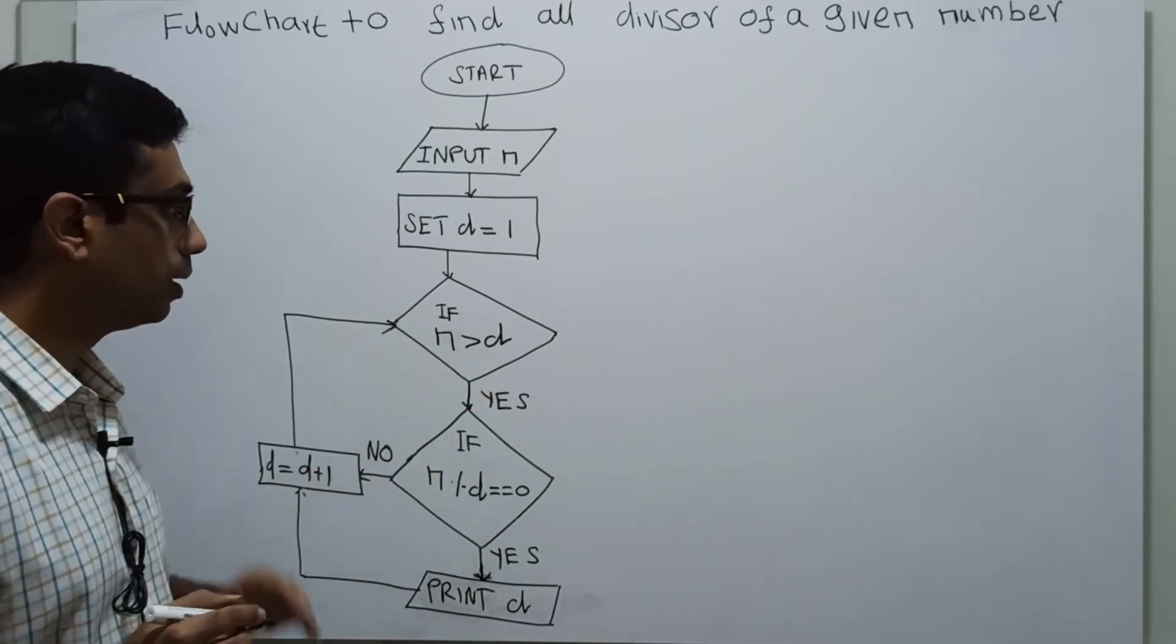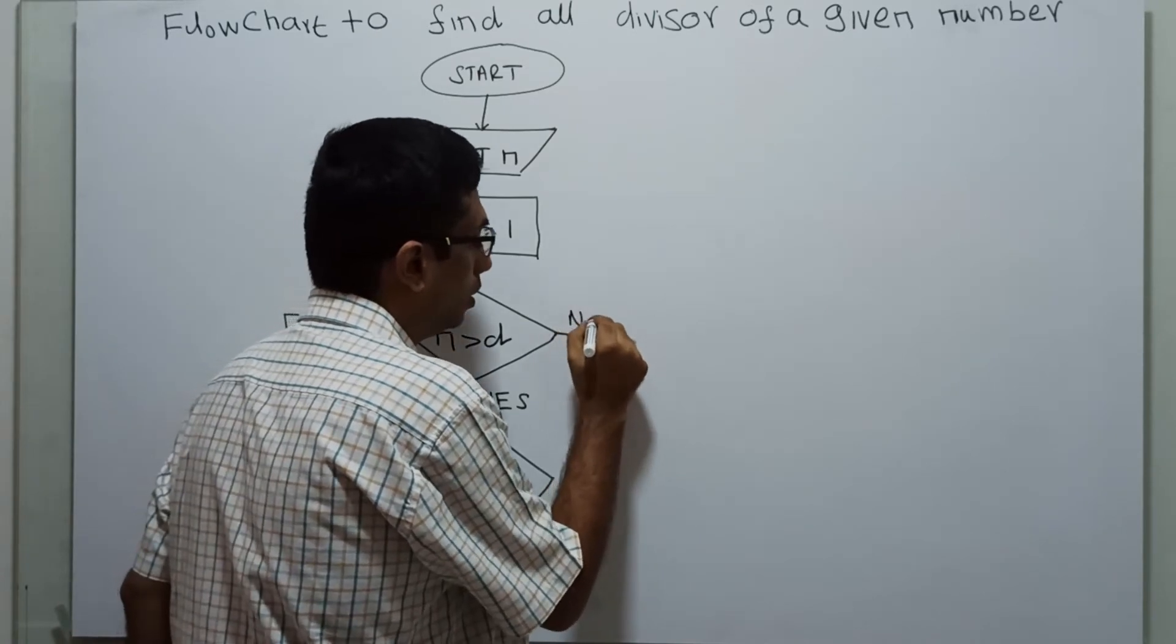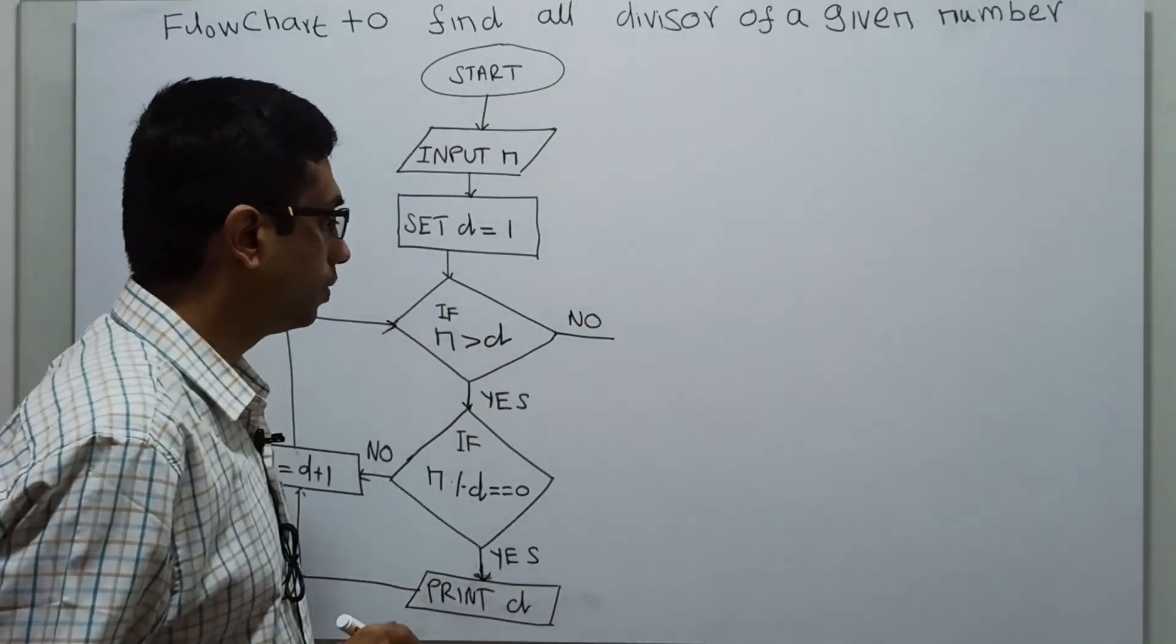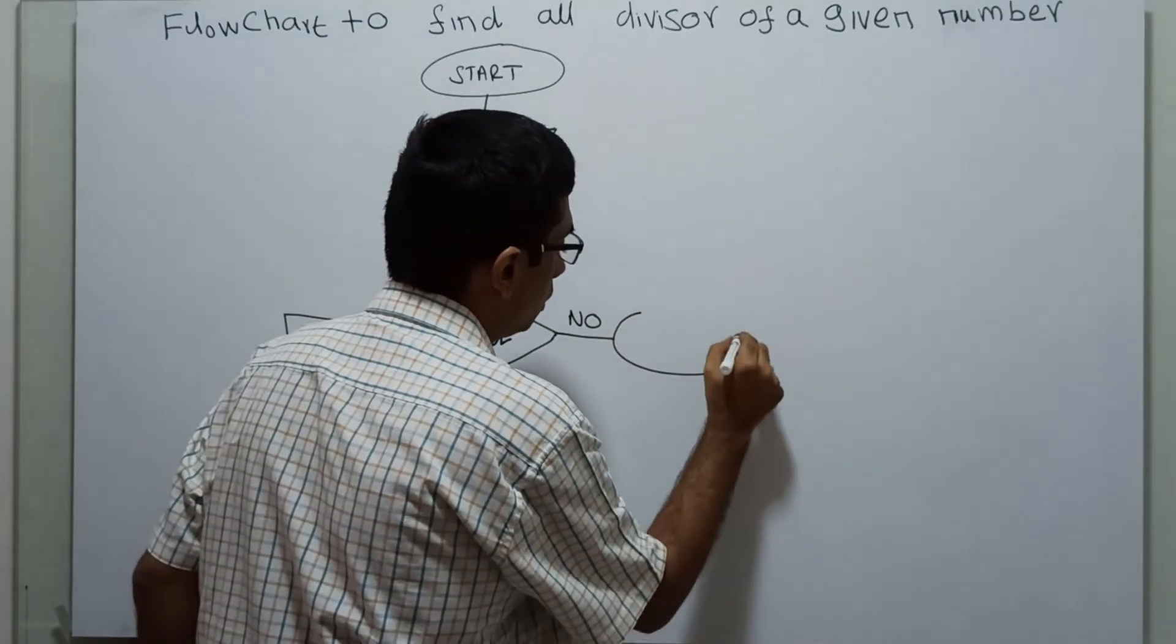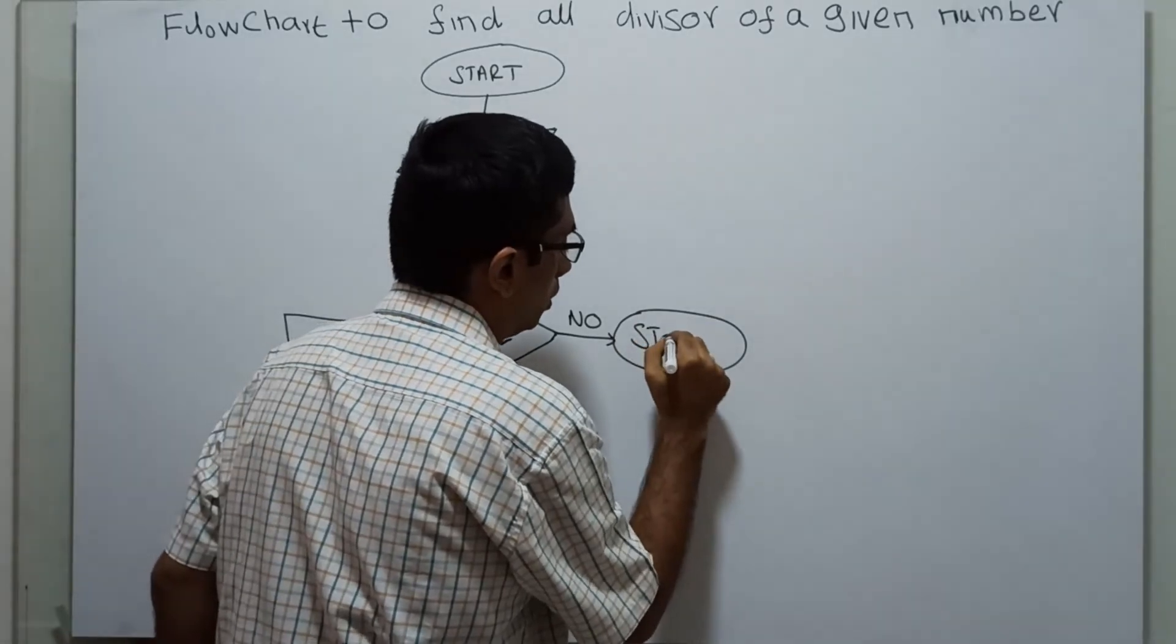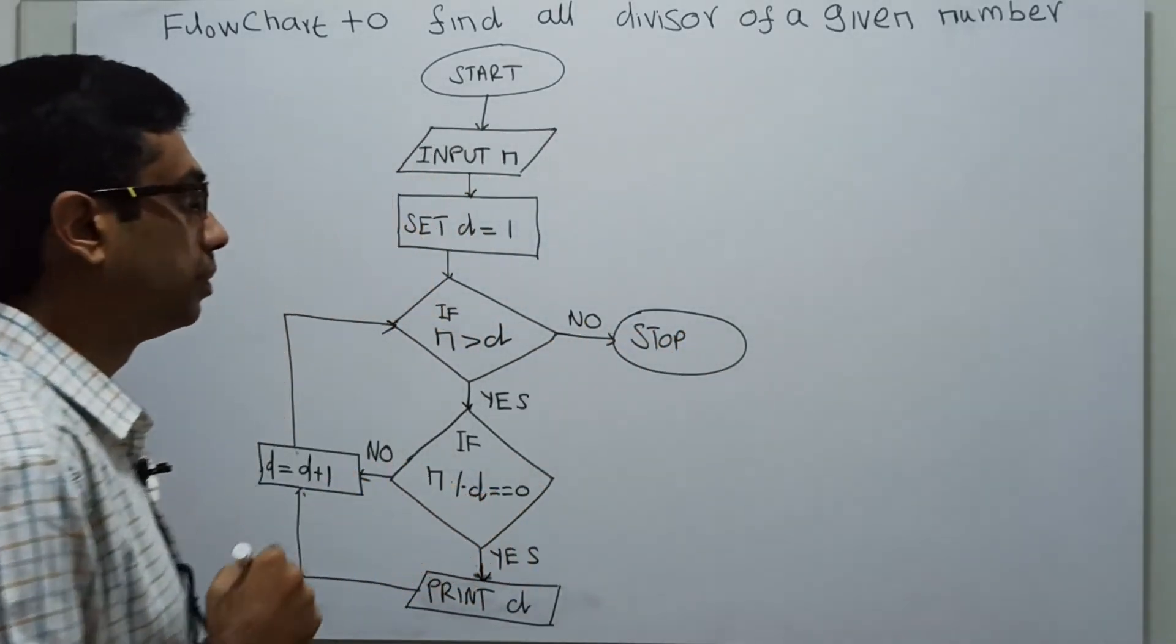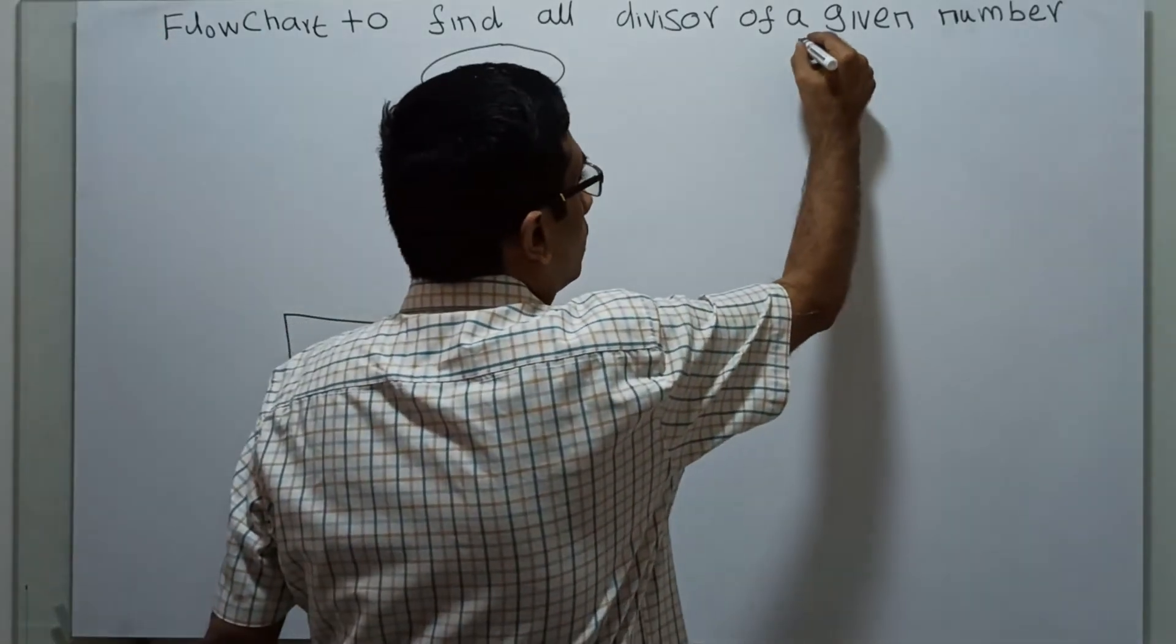If it is no, that means n greater than d is false. That is the logical stop of the algorithm. That's it, this is the flowchart. We will decide how it works.